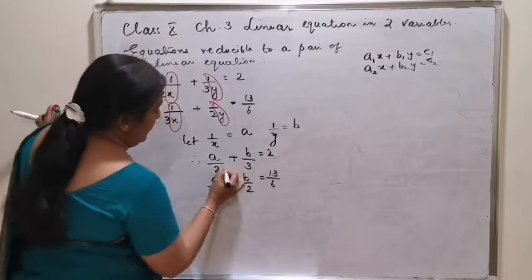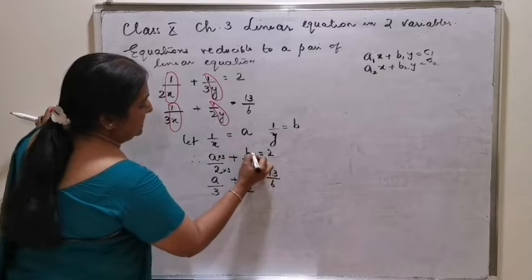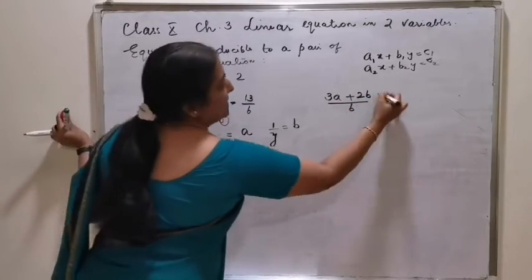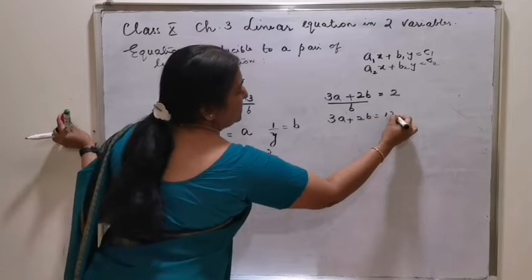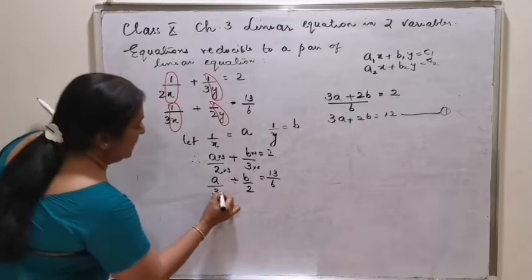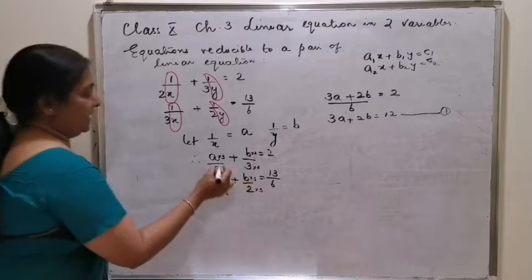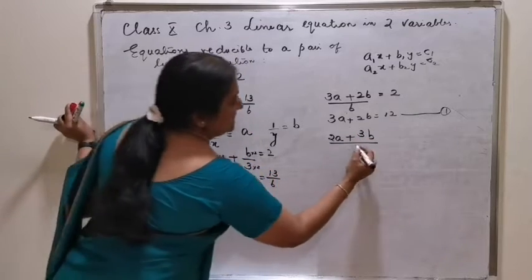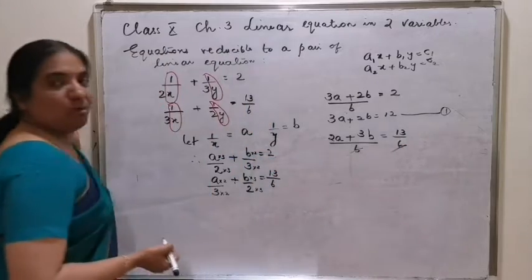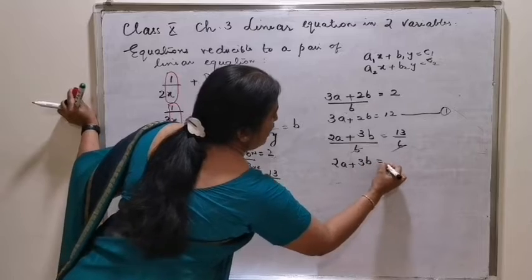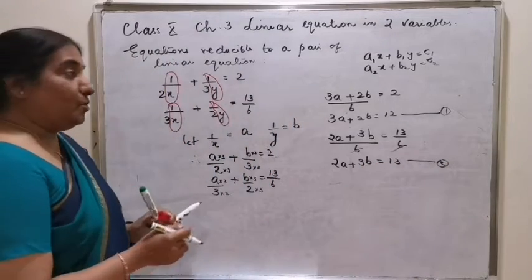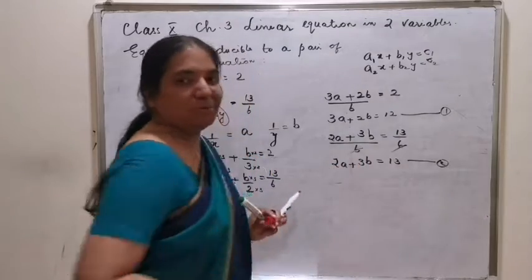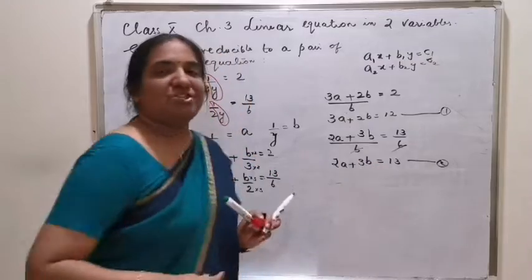LCM is 6. You will make it as 3a plus 2b by 6 is equal to 2, or 3a plus 2b is equal to 12. Again, here the LCM is 6. You will get the second equation as 2a plus 3b is equal to 13. There are two methods of solving. Here you can see it is a direct interchange of the coefficients.